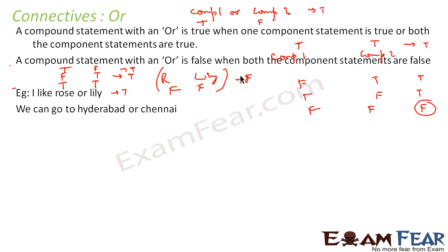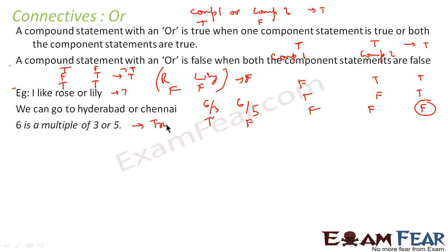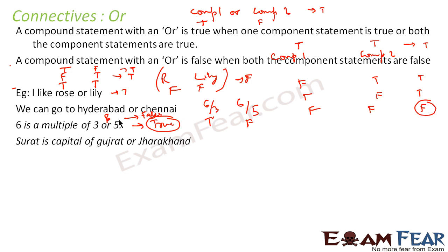Take more examples. 'We can go to Hyderabad or Chennai.' If one of these is true, then the statement is true. Next: '6 is a multiple of 3 or 5.' 6 divisible by 3 is true, and 6 being a multiple of 5 is false. So one true and one false — but since we are using OR, the whole statement is true. If you had said '6 is a multiple of 3 and 5,' it would have been false, because in case of AND both statements must be true. But '6 is a multiple of 3 or 5' is a true statement. Another example: 'Surat is a capital of Gujarat or Chennai.' Surat is a capital of Gujarat is false; Chennai being a capital — one is false, one may be true. So with OR, the whole statement depends on whether at least one component is true.